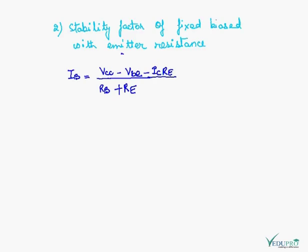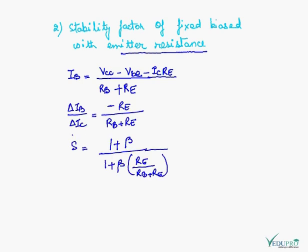In emitter resistance circuit, IB will be VCC minus VBE minus IC times RE upon RB plus RE. Because this is 0 and delta IB upon delta IC of this is 0, now stability factor on placing the values of delta IB upon delta IC, we will get this.